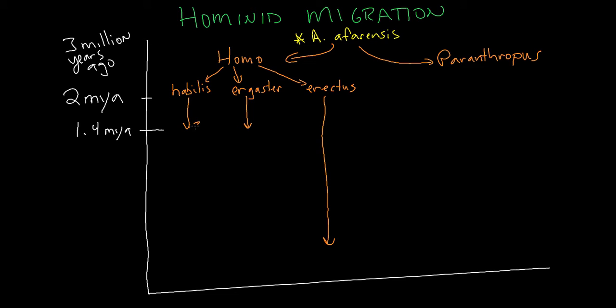But one of those, Homo erectus, that's the first species that we have evidence of that left Africa. Now, that doesn't mean they were the first to leave Africa. It just means they're the first that we found the evidence of.